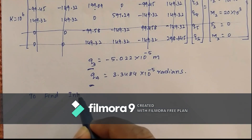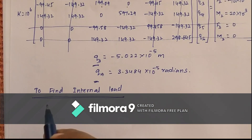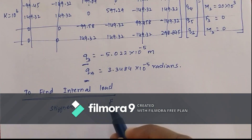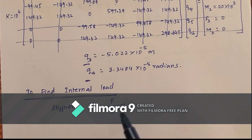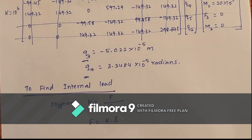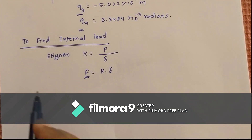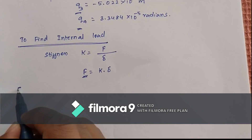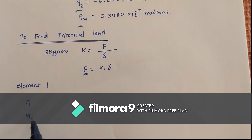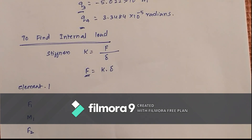To find internal loads, we use the formula: internal load f equals k into delta, since stiffness k is force per unit deflection. For element 1, f1 is the transverse force, M1 is the angular moment at node 1, f2 is the transverse force at node 2, and M2 is the angular moment at node 2.